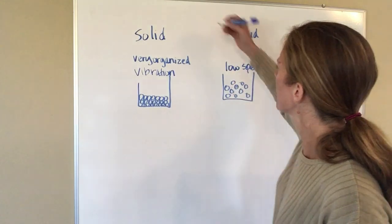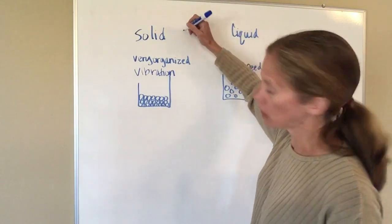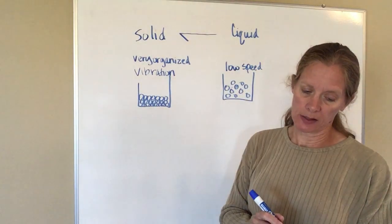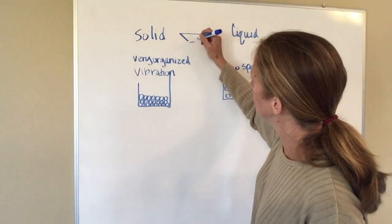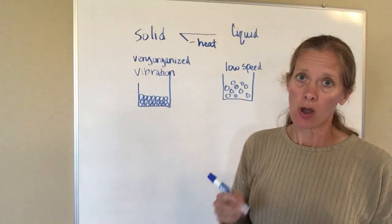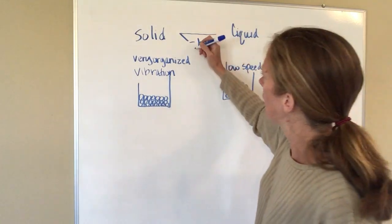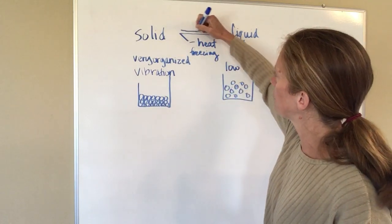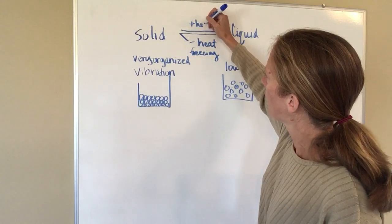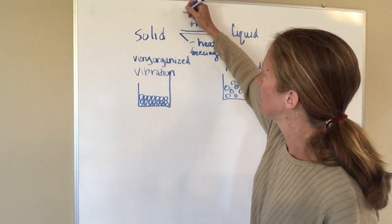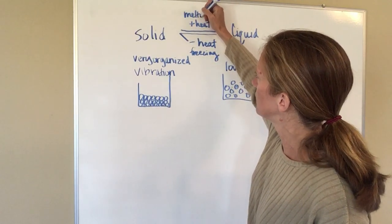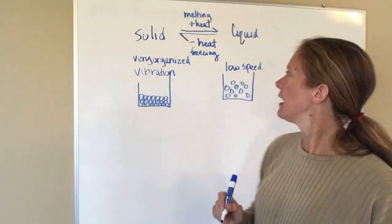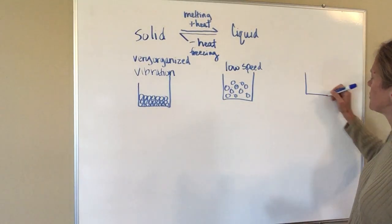In order to go from a liquid to a solid, I have to basically take away heat or I have to cool it down, and that is called freezing. Now if I want to go from a solid to a liquid, I have to add heat and that is classified as melting.